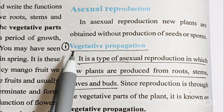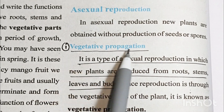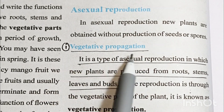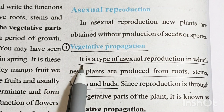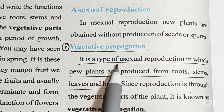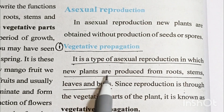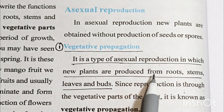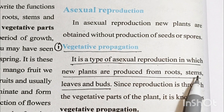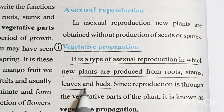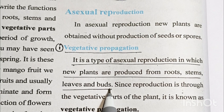Number 1: Vegetative propagation. It is a type of asexual reproduction in which new plants are produced from roots, stem, leaves and buds.